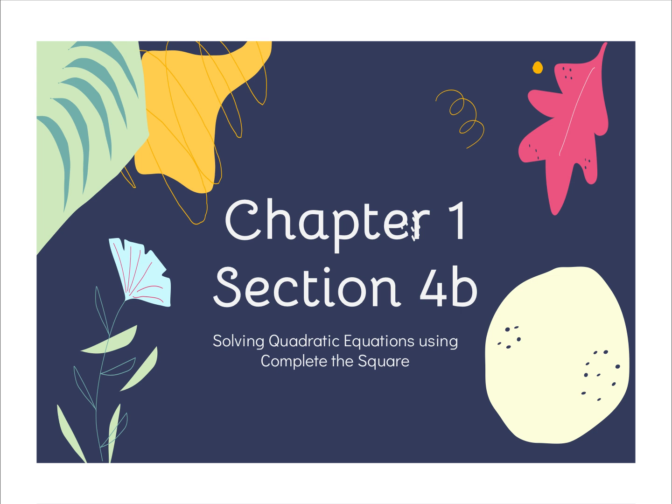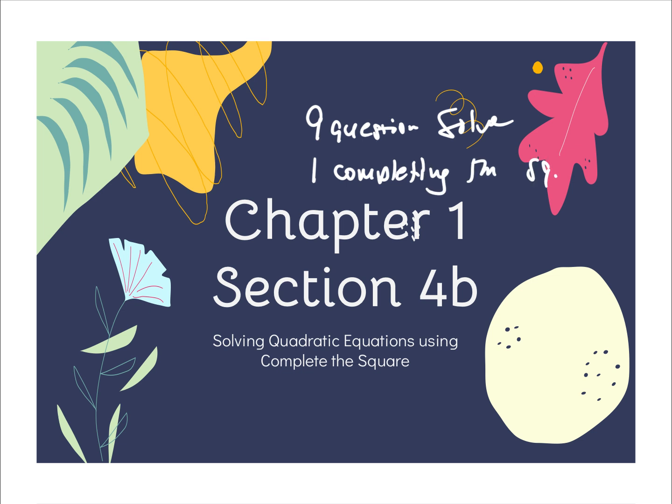There are nine questions that say 'solve.' That means you solve using whatever method applies: if it's irrational you get a common denominator, if you can factor it you factor it, if you solve by taking the square root of each side you do that, and if it's a linear equation you distribute and solve. Then there's going to be one that says you have to solve by completing the square. If you do not show your work or you use a different method, you're not getting credit. You have to demonstrate that you know how to solve by completing the square.